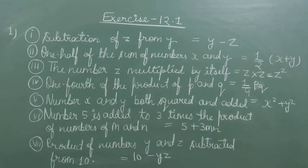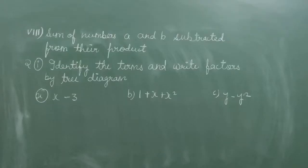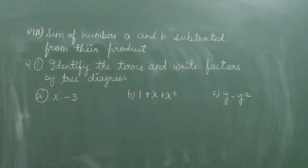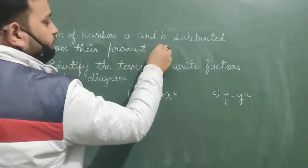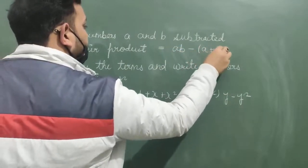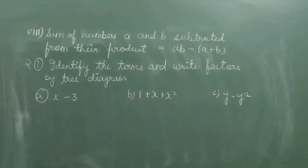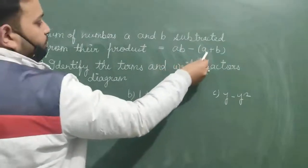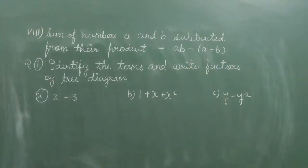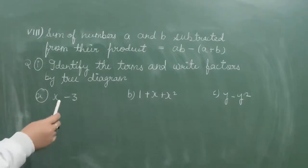Eighth part: sum of numbers a and b subtracted from their product. The product of a and b is ab, and the sum of a and b is a plus b. According to the statement, we write ab minus (a plus b). Now question number 2 of the same exercise 12.1.